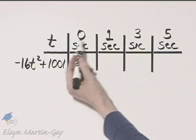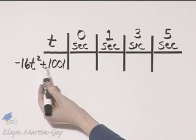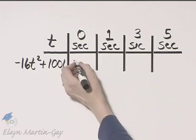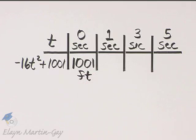If we have zero seconds, if T is zero, can you see this term is zero, plus one thousand one. We'll have simply one thousand one, and we are in feet. So at zero seconds, the height is one thousand one feet.